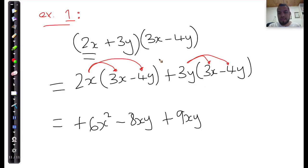Okay, 9xy. And then I say positive times a negative is negative. 3 multiplied by 4 is 12. And y multiplied by y is y squared.